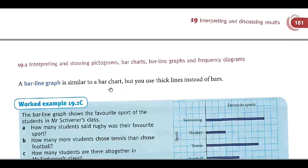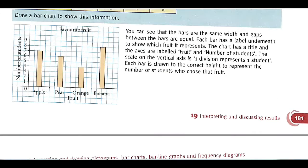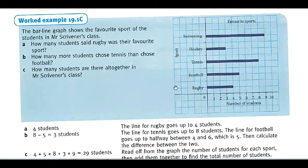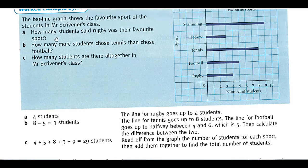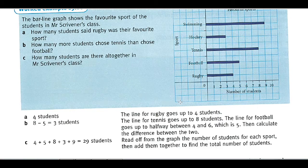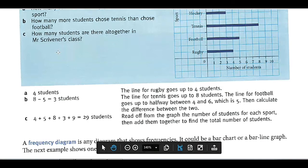Now bar line graph: what is the difference between bar chart and bar line graph? We have this data. How many students said rugby was their favorite sport? Rugby, how many students? Four. How many more students chose tennis than football? Tennis has eight and football has five, so eight minus five, that is three. How many students are there altogether? We just add all these numbers, so you will get 29.